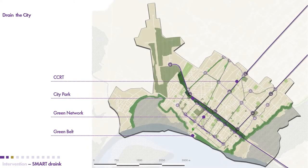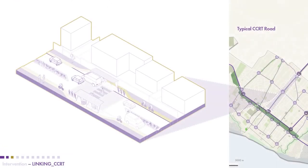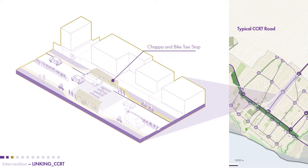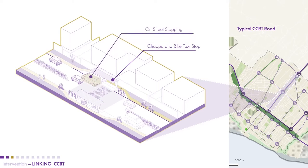Looking at the chapa system, we prioritized chapas on the main street so they could stop within the main street and pick up passengers while allowing other vehicles to drive past. The street has been engineered to allow for on-street stopping while still allowing movement of other passing vehicles.